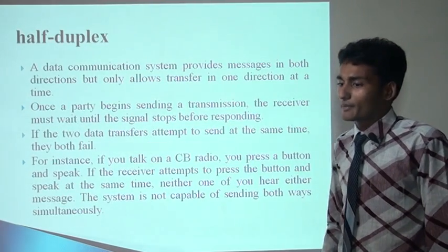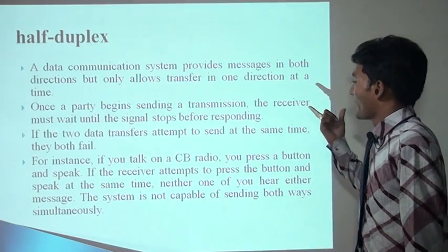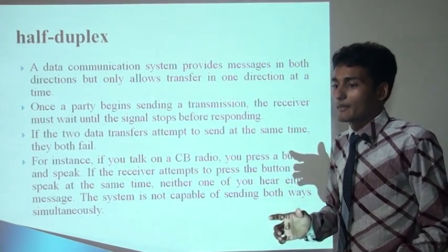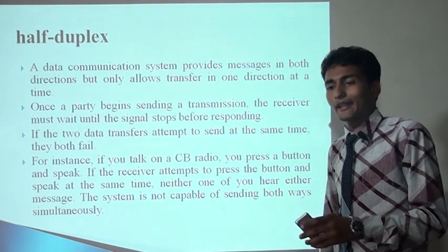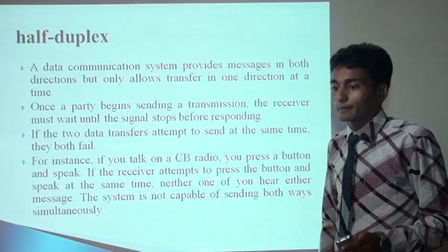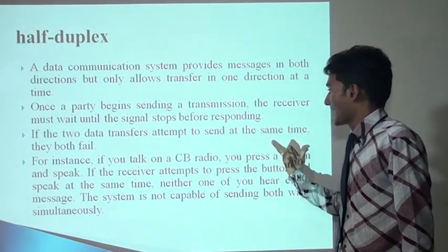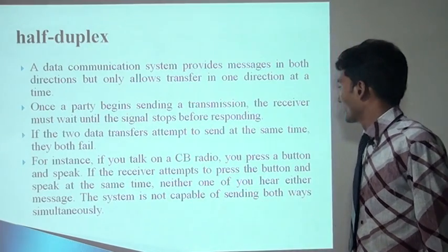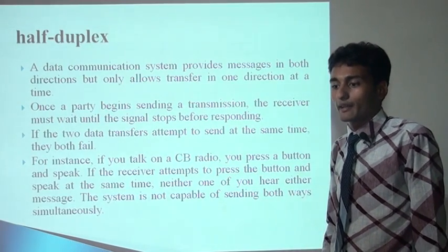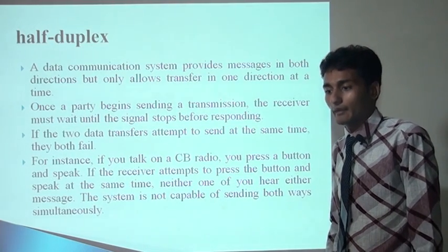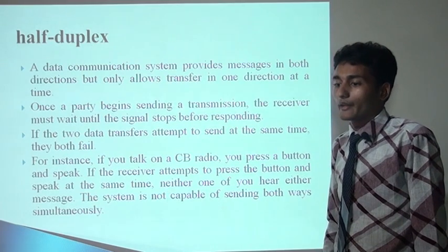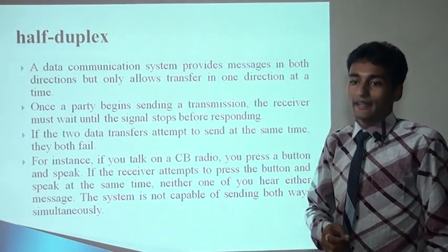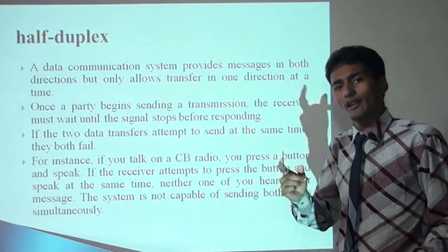Half duplex: in this type of system, we can send a message in both directions, but at a time we can perform only one operation — either send or receive. Once a party begins to send a transmission, the receiver must wait until it stops before responding. If two parties attempt to send at the same time, then both fail. For example, a CB radio — we press a button and speak. If the receiver also presses the button and speaks at the same time, neither one hears the other's message. The system is capable of sending in both directions, but only one operation performs at a time.